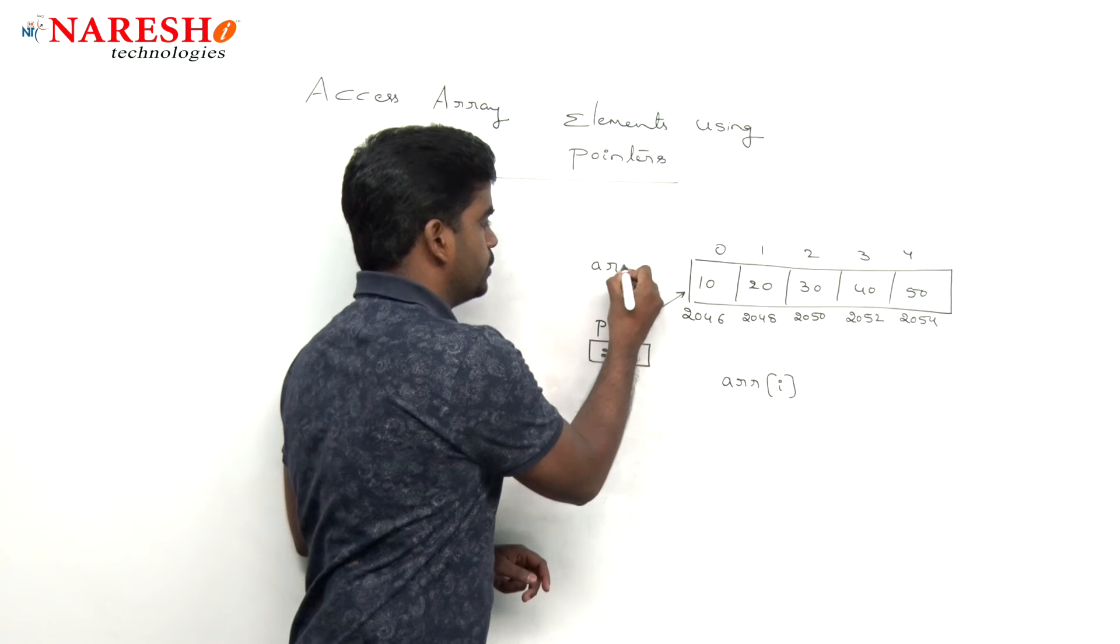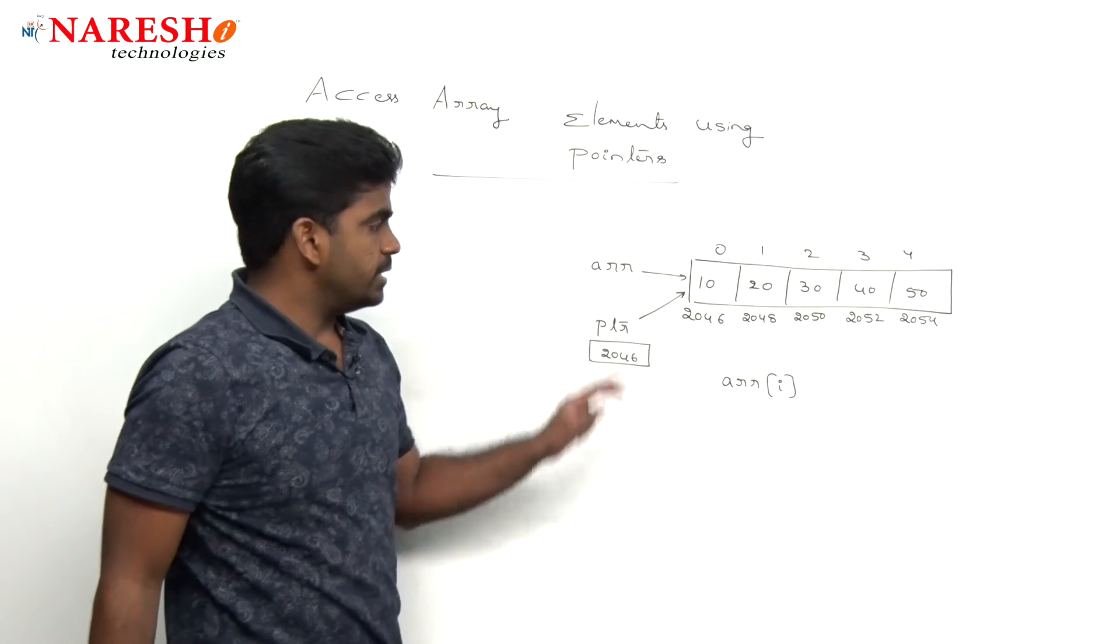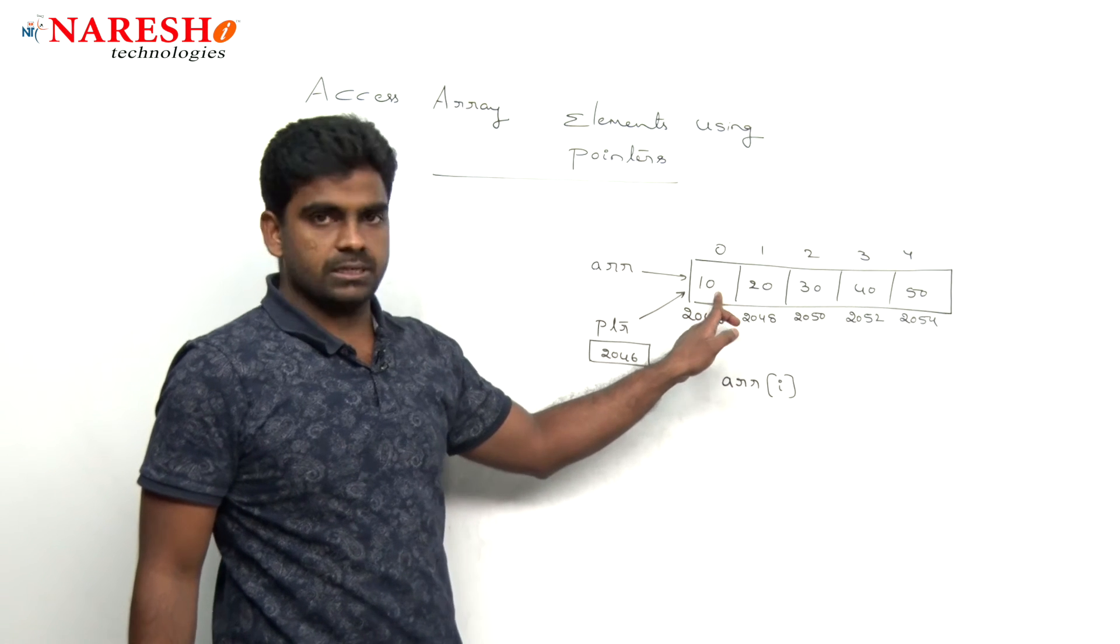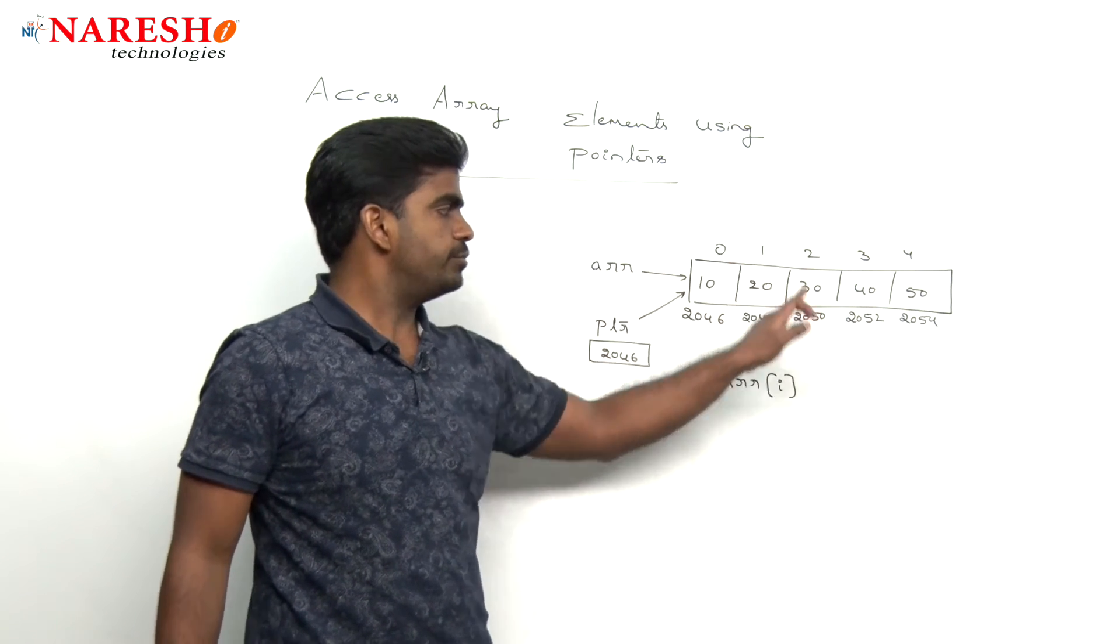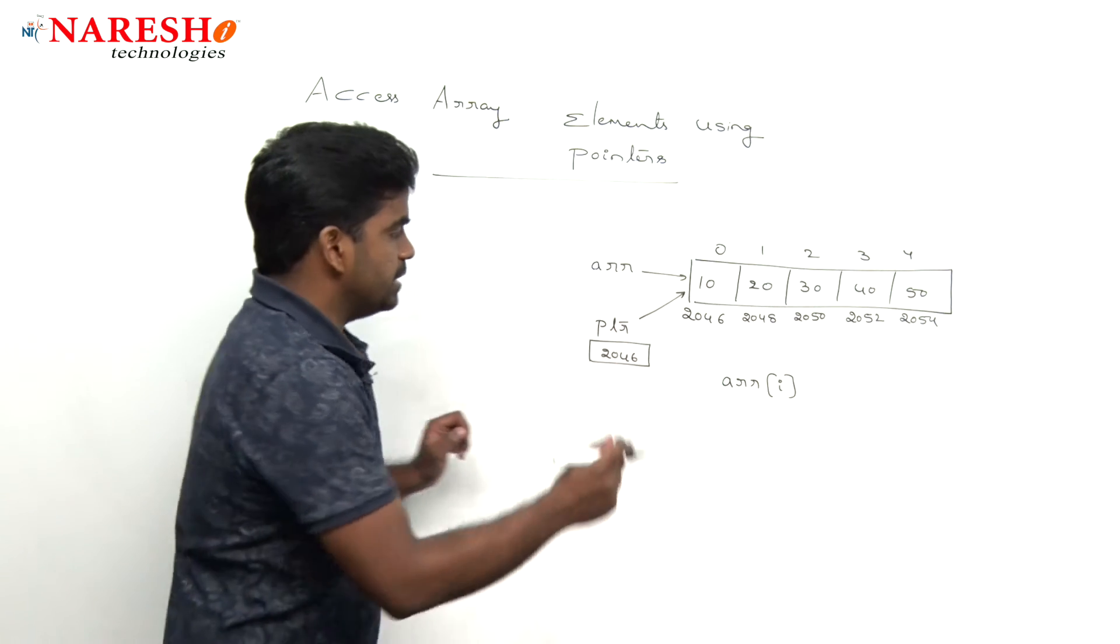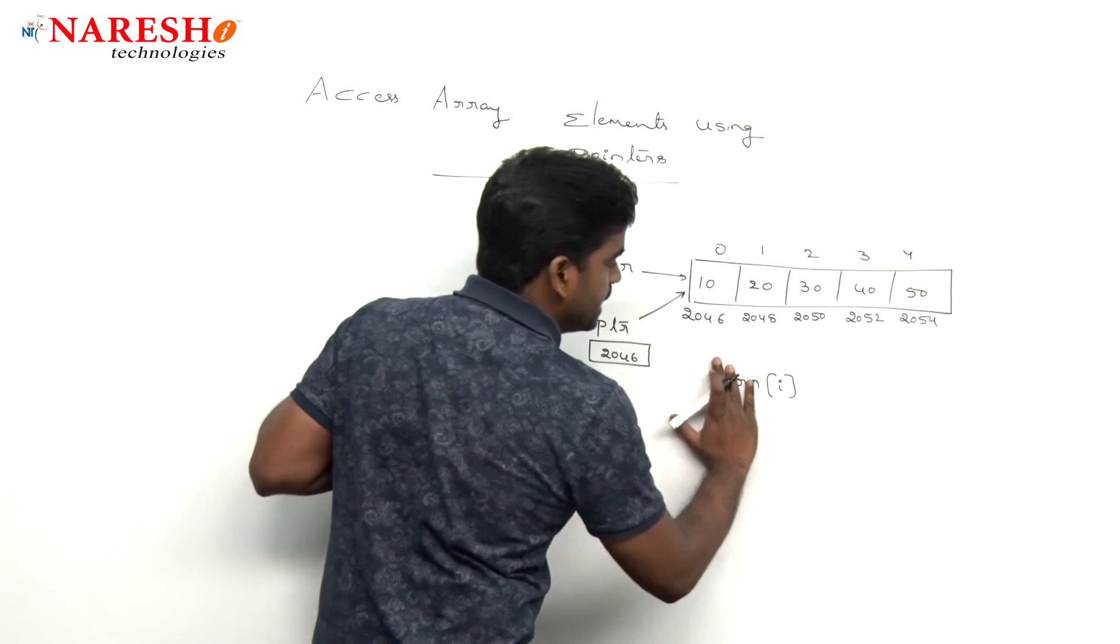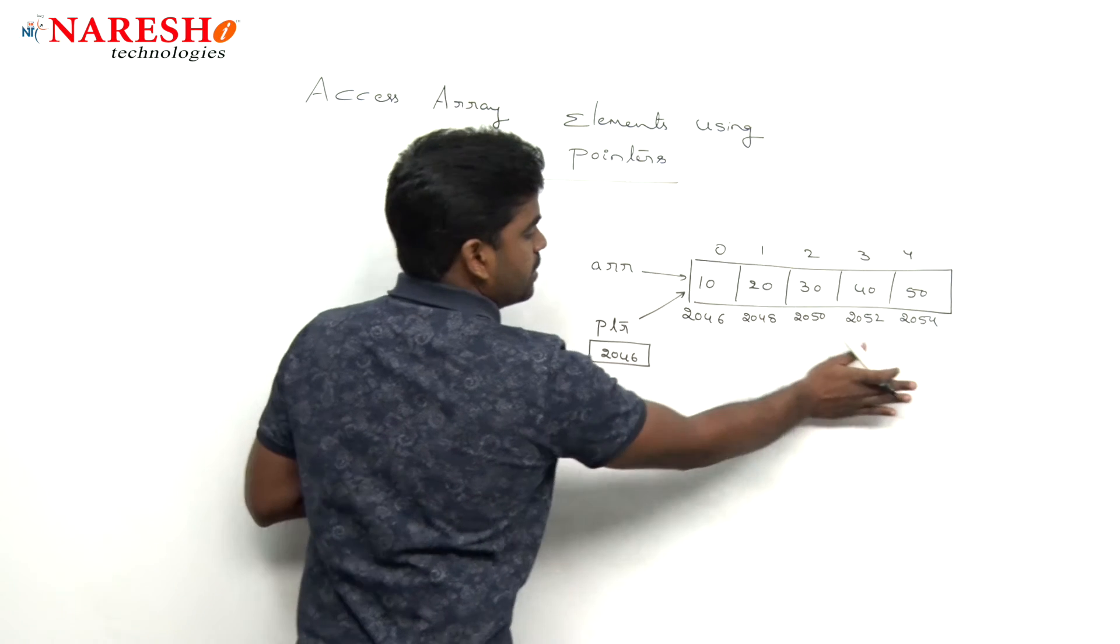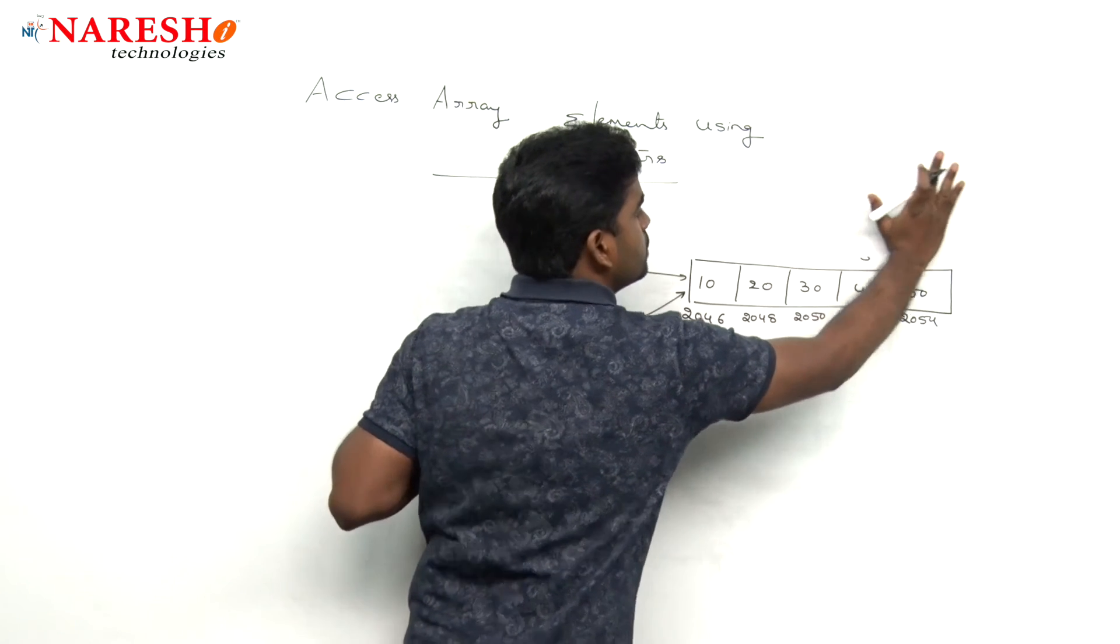ARR of 0 means what is the location? ARR of 1, ARR of 2 like this. When the pointer is pointing, there is no indexing concept.